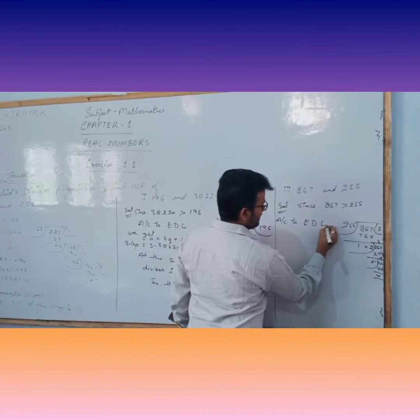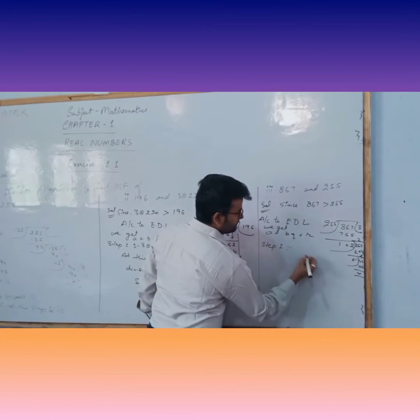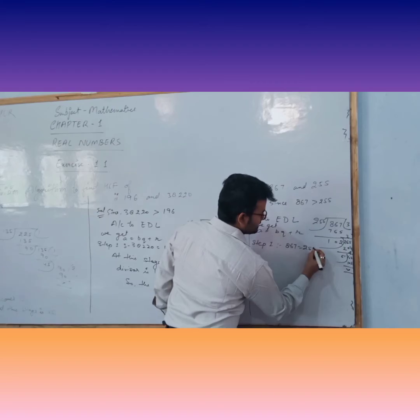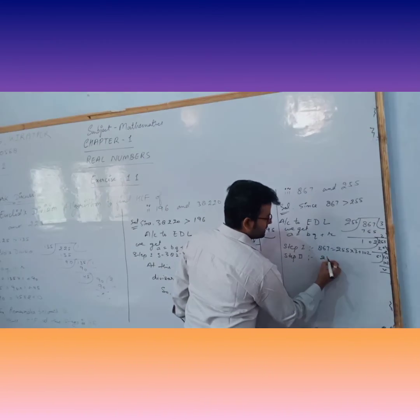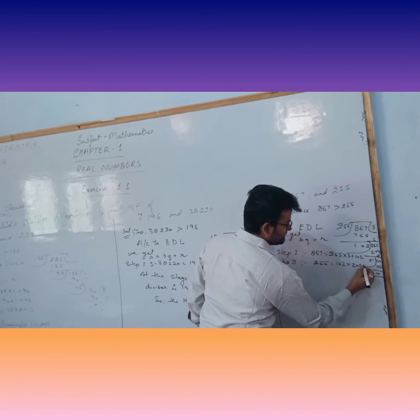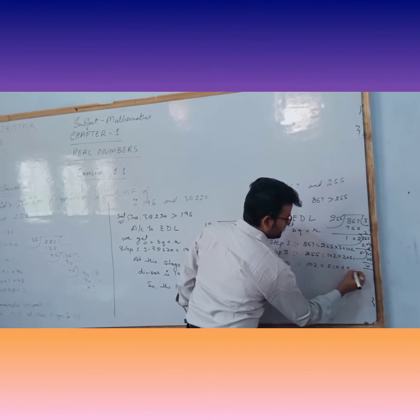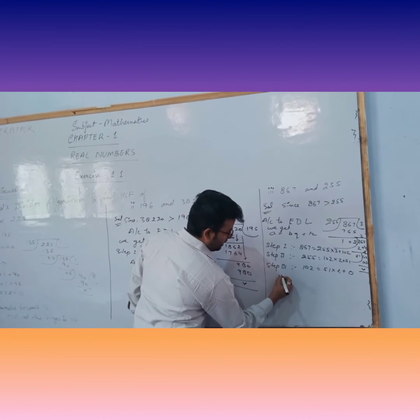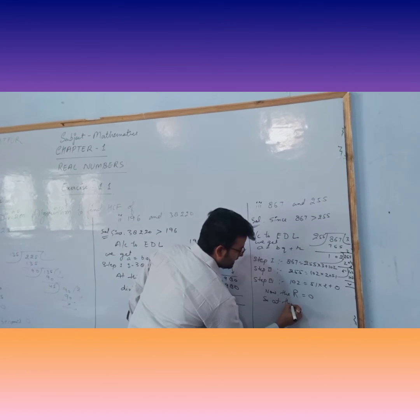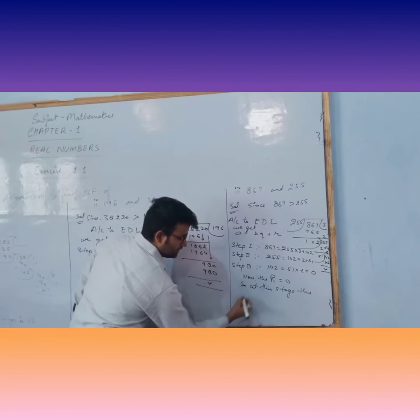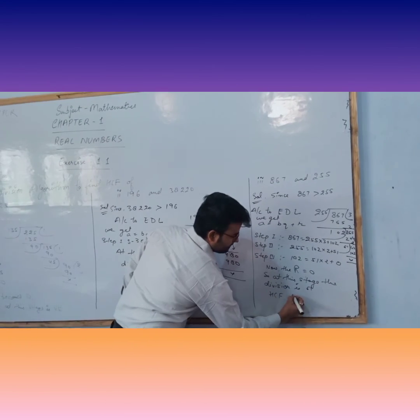So according to Euclid's division lemma, we get A equals BQ plus R in step 1. In step 2, this is dividend, this is divisor, this is quotient and remainder is 51. In step 3, this is dividend, this is divisor, this is quotient and remainder becomes 0. Now the remainder becomes 0. So at this stage, the divisor is 51. So we can write HCF is 51.